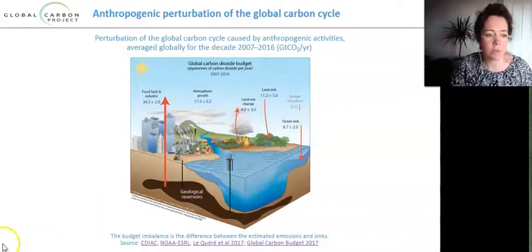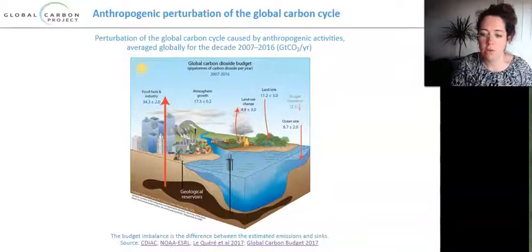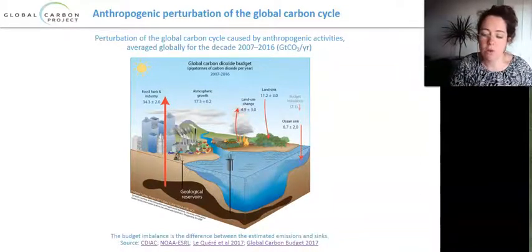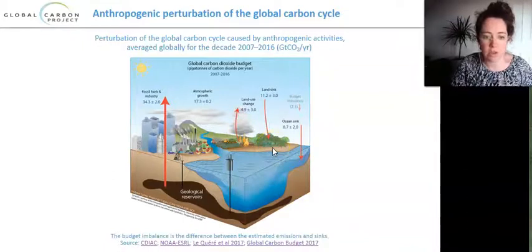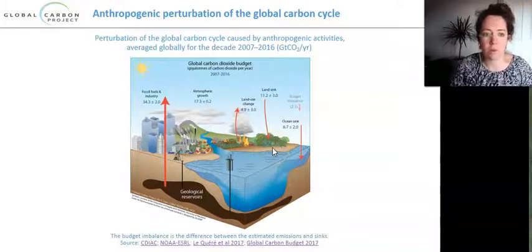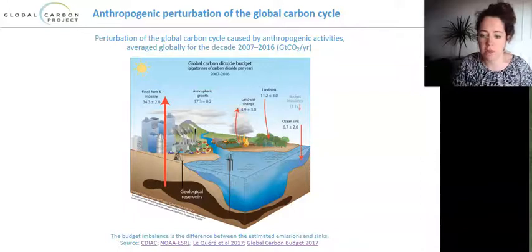As we saw in the last lecture, as a result, the concentrations of CO2 in the atmosphere are increasing. The rest of the increase is also caused by land use changes, particularly deforestation. When we change the balance in land reservoirs — in the soil and in the biomass — that also increases the concentration of CO2 in the atmosphere.